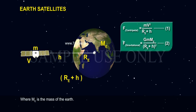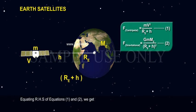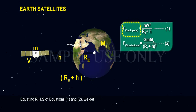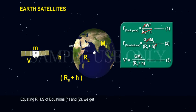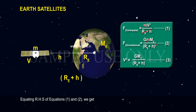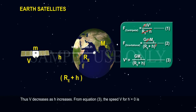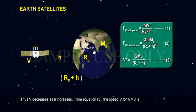Equating the right-hand sides of equations 1 and 2, we get V² equals GME divided by (RE + H), Equation 3. Thus, V decreases as H increases.